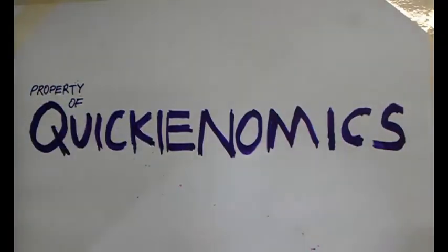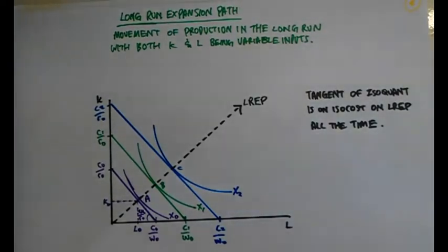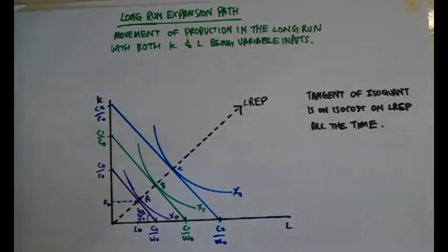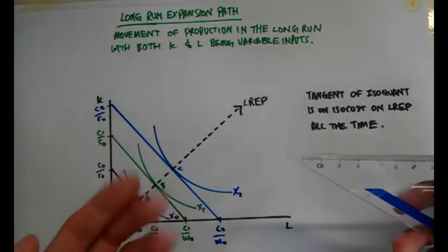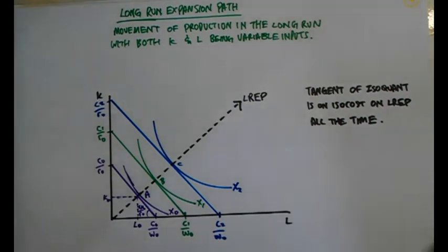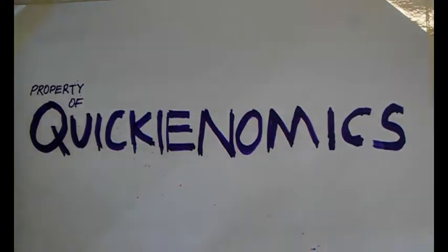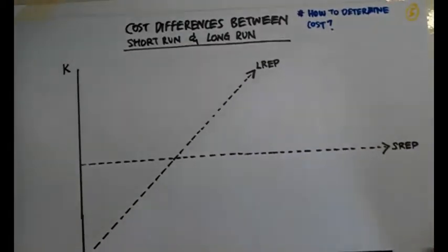Now let's talk about the long-run expansion path. In the long run, the firm will always be able to be productively efficient because it can vary the amount of capital it puts in. It will always be able to make the Isocost tangent to the Isoquant. As the firm produces more of X, the cost is higher. Using the Isocost and Isoquant model, we can find out whether it is more expensive to produce in the short run or the long run.